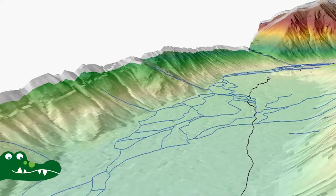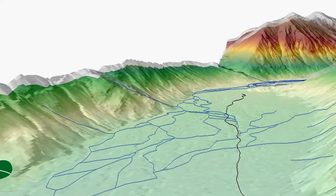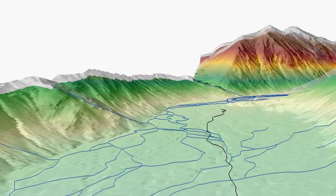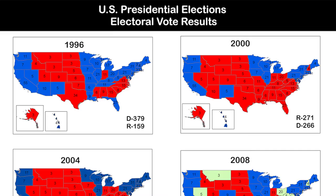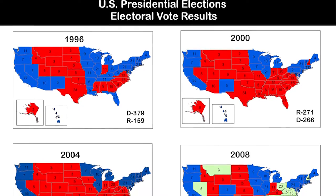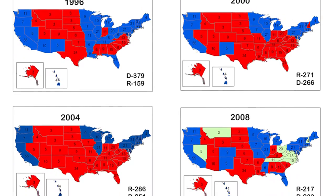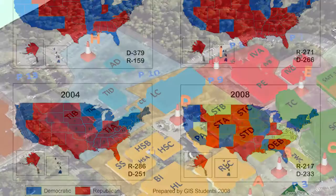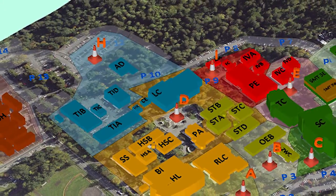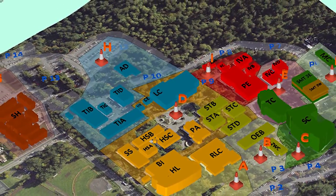If you are in natural resources, definitely you need GIS. If you are in geology, you need GIS. Environmental science, you need GIS. If you are in politics, you need GIS. I give 100% flexibility to students to choose their project.